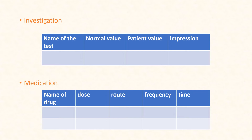The next heading is medication. Make a table with columns for name of the drug, dose, route, frequency, and time. For example, for paracetamol, write the dose, whether the route is IM, oral, or IV, the frequency such as BD or TID, and the specific times such as 8 a.m. or 2 p.m. All this information can be obtained from the case sheet.